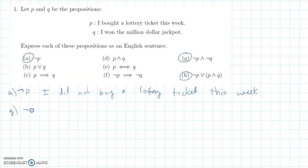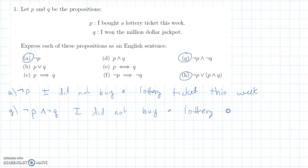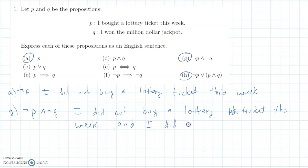Problem G would be NOT P AND NOT Q. In English that would be: 'I did not buy a lottery ticket this week' — and, because the upside-down V is AND, a conjunction — 'and I did not win the million dollar jackpot.'